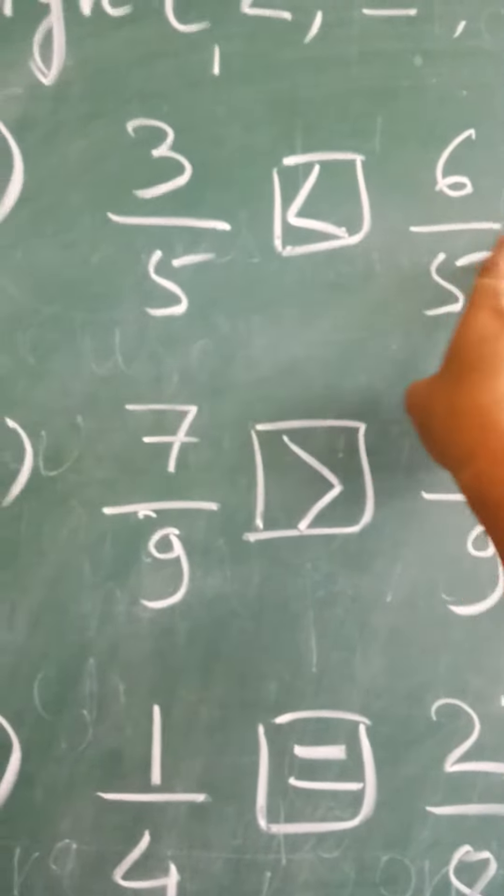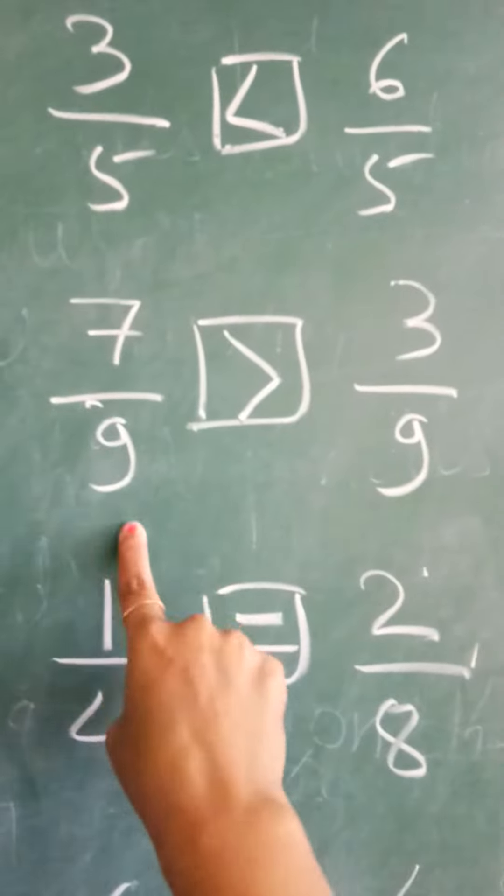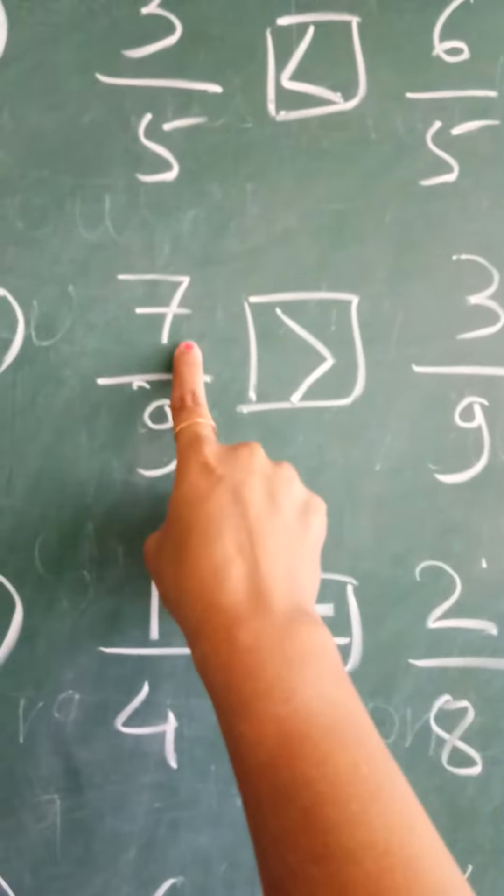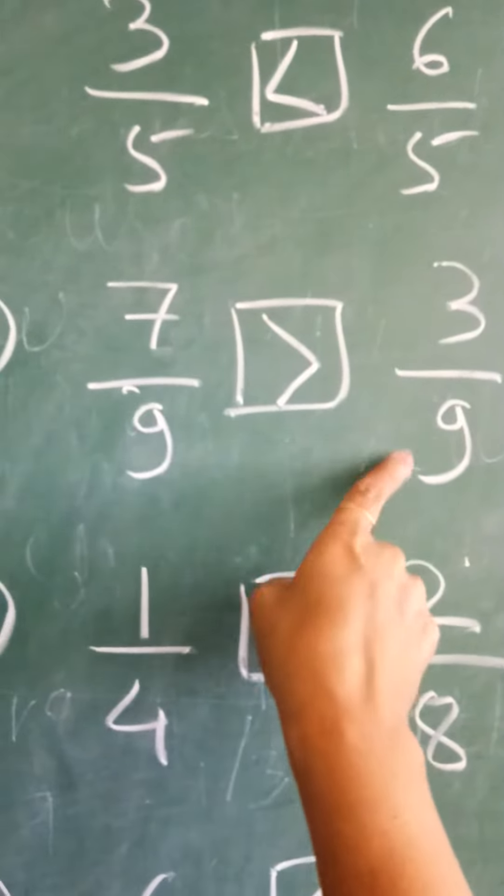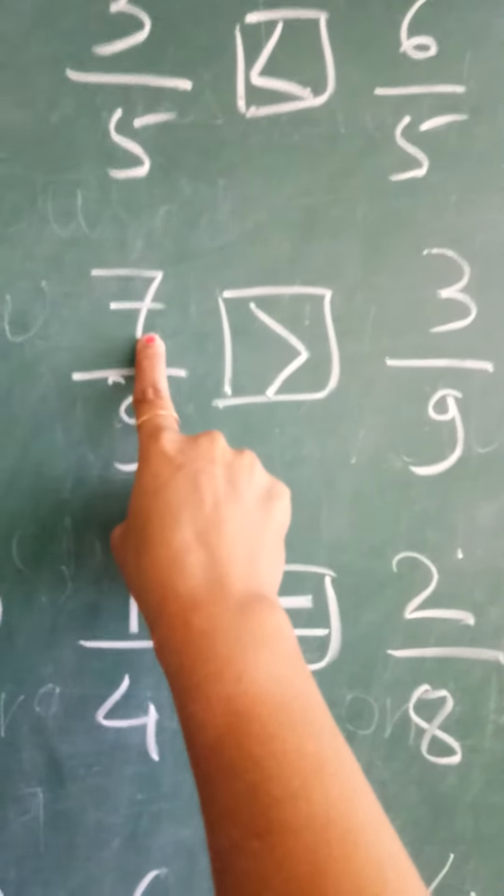Then 7 upon 9, 3 upon 9. 9 sevens are 63, 9 threes are 27. 63 is greater than 27.